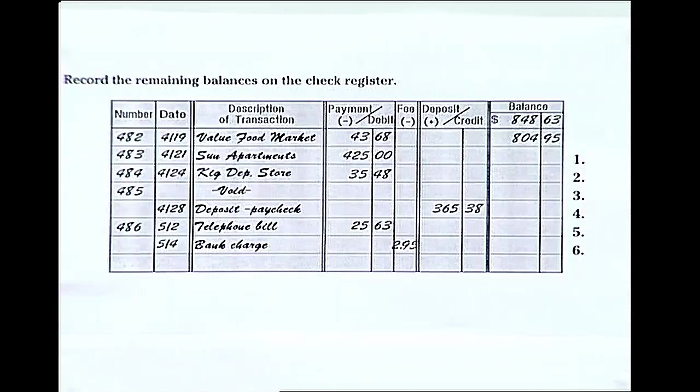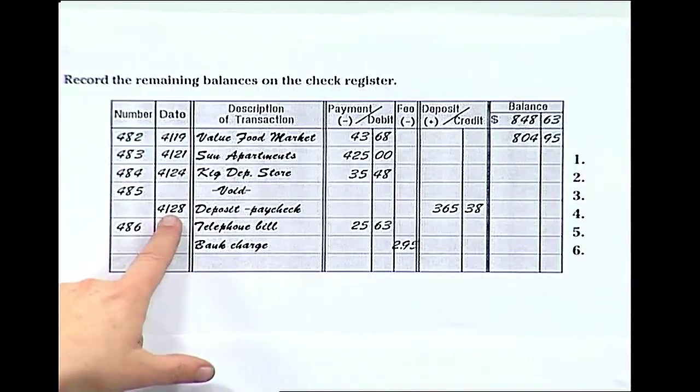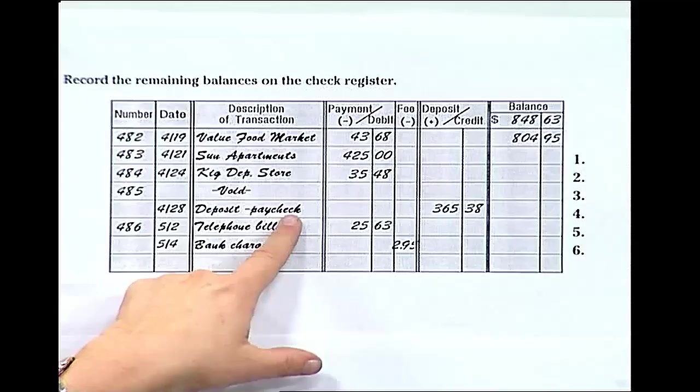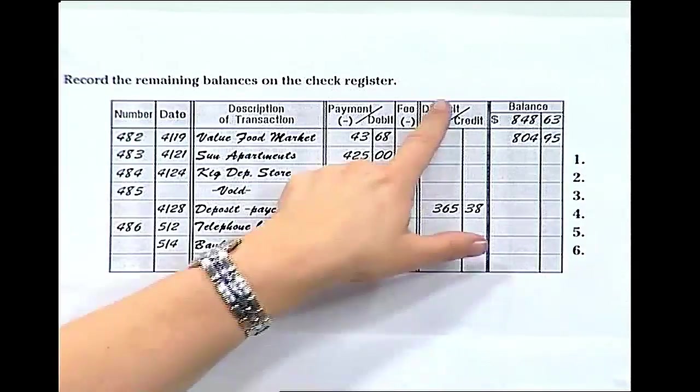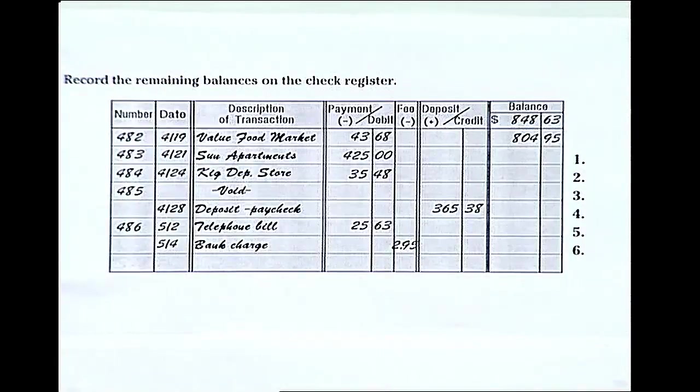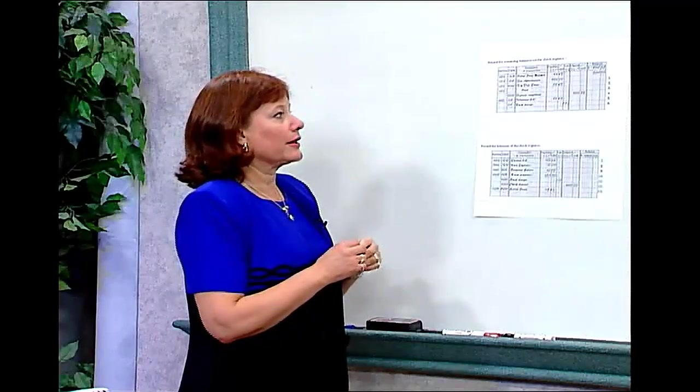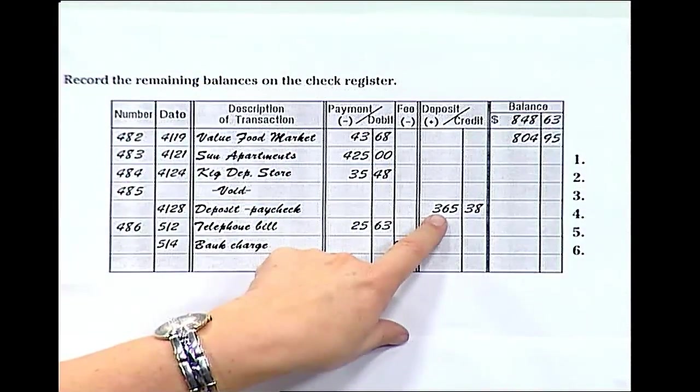The second kind of transaction is a deposit. We've written a deposit in our check register. We've noted the date, 428, and we wrote deposit. The deposit gets registered in the deposit or credit column. That's because you're putting money into your checking account and will increase your balance. So when you put a deposit in, you'll put it in this account, and that will be added to your balance.